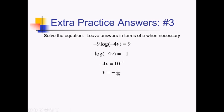If I quickly plug that back in to make sure I don't get zero or undefined negative numbers: negative 4 times negative 1 over 40 is going to give me a positive. That's fine to be inside a log. So this answer is going to work for us.